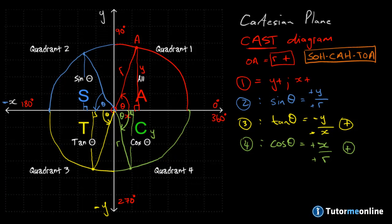Remember that basically nothing is changing — all we're doing is using a large circle divided into four quadrants. In quadrant 2, the sine function will always give us a positive value for the size of theta. In quadrant 3, tangent gives a positive value for theta. In quadrant 4, the cosine of theta gives a positive value for theta.